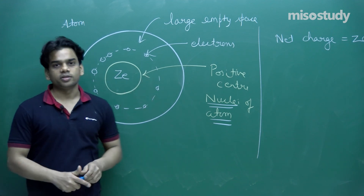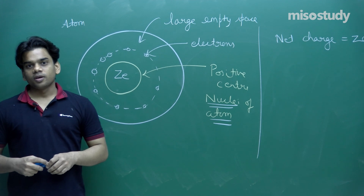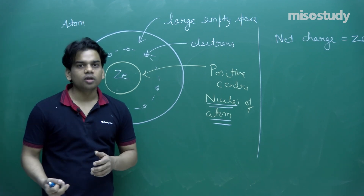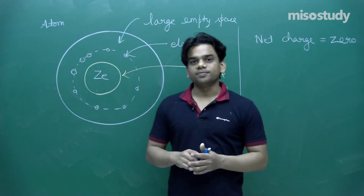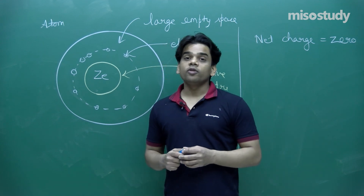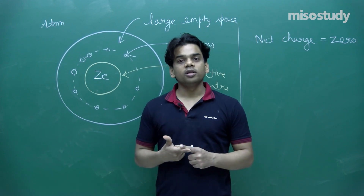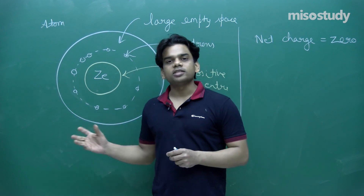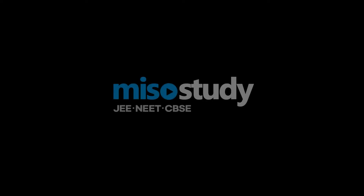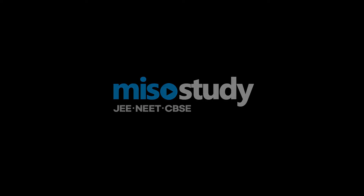First of all, it was unable to explain the hydrogen spectral lines, or spectral lines of hydrogen atom. Later in this chapter we'll see what those spectral lines are. It was unable to explain spectral lines of hydrogen atom or hydrogen-like atom — a different model was required to explain those spectral lines.